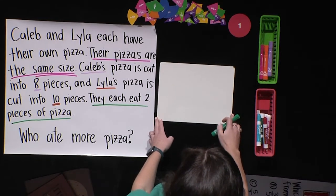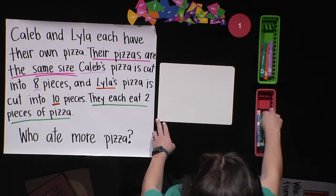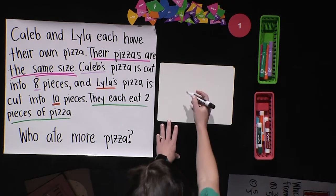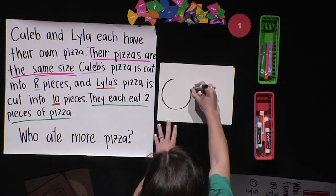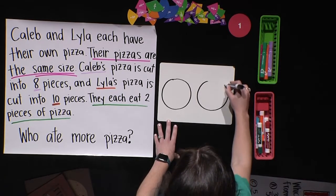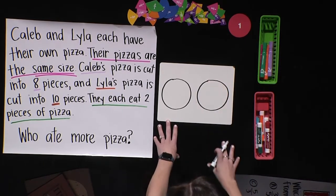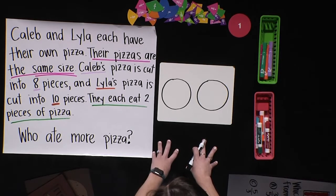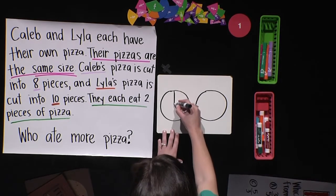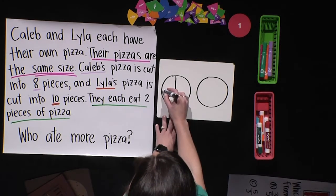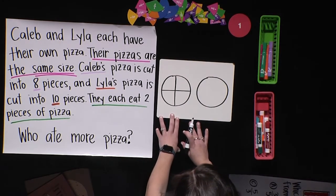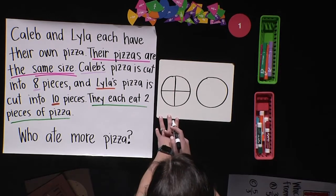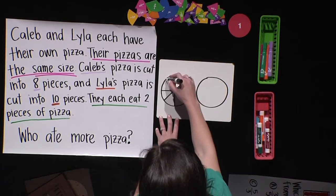Let's go to our small board and draw what that might look like. Their pizzas are the same size, so when you come to your drawing board, or your journal, or wherever you may be following along, make two wholes that are the same. Caleb's pizza is cut into eight pieces, so I'm going to take my circle, do a half, a line across to make fourths. Four times two is eight, which means I need to split each of these pieces into two more pieces, so I'm just going to draw an X.